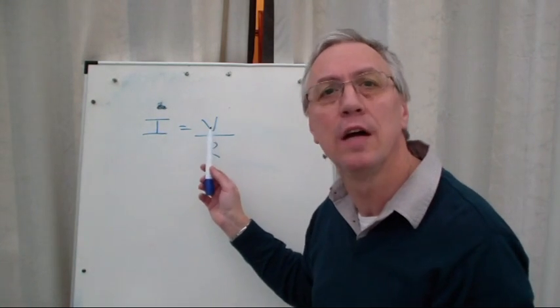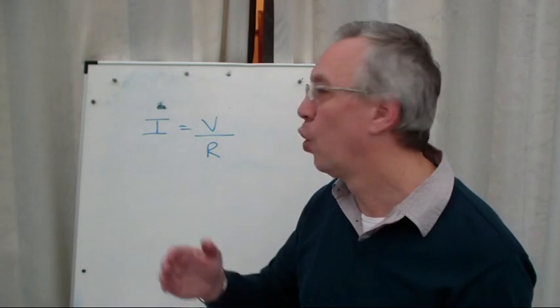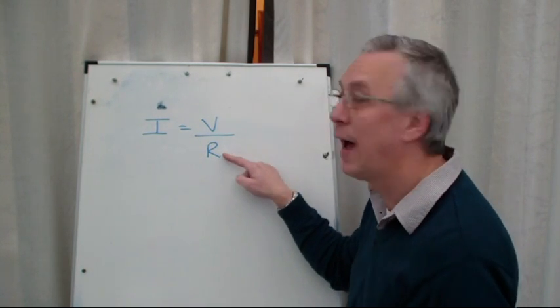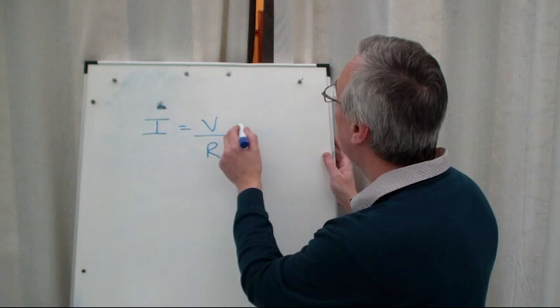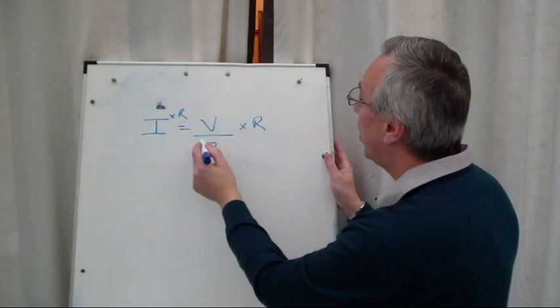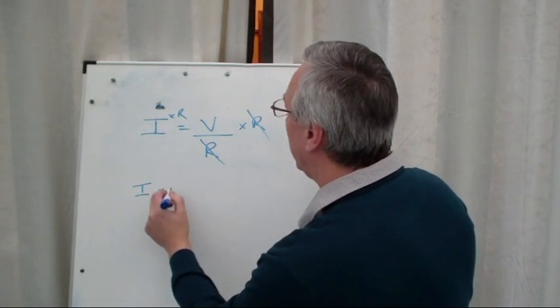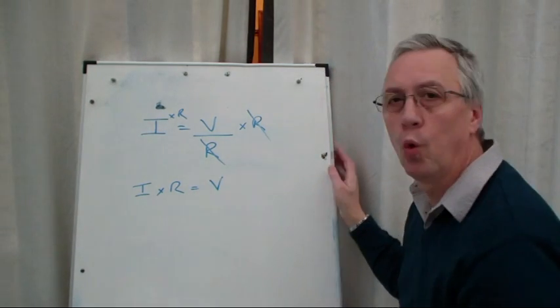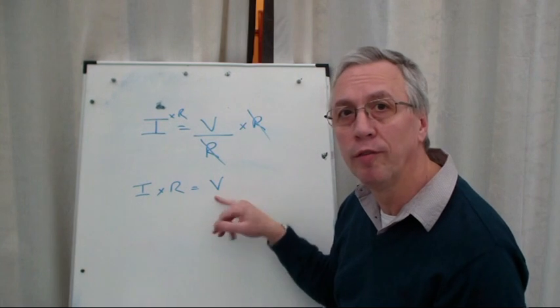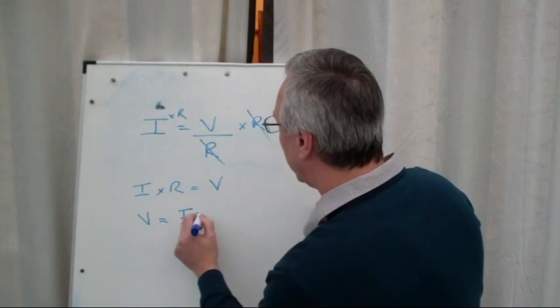Let's say we want to make V the subject. We want to get V on its own. From the rules of transposition, whatever we do to one side of the formula, we must do to the other. If I want to get V on its own, I need to get rid of that R. How can I do that? If I multiply this side by R, I have to multiply the other side by R. These R's now cancel out, and I'm left with V on its own. I times R equals V. We like to express formulas with the subject on the left-hand side. So when we've worked it through to get the value we're looking for, we just change that around so that the subject is on the left. So V equals I times R.